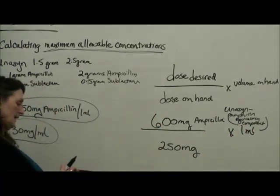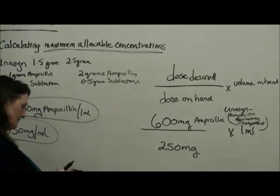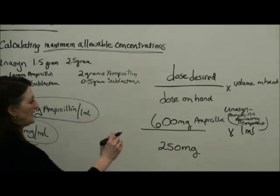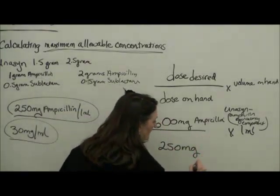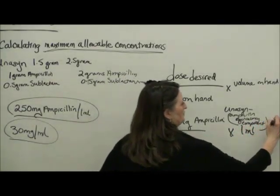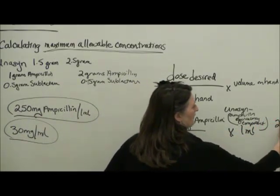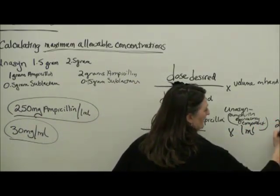So if we take 600 and we divide it by 250, we need to draw up, this comes out to 2.4 milliliters of Unasyn.